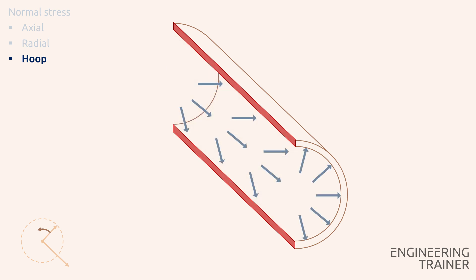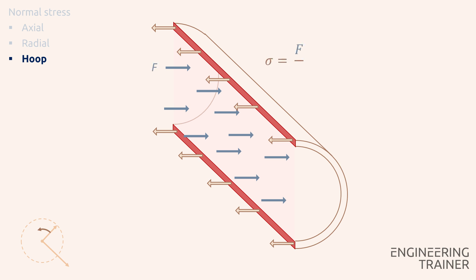The force components perpendicular to the plane try to pull the pipe apart, but the material counteracts these forces, which forms the hoop stress. As long as the pressure is not excessive, both will be in equilibrium. To calculate the hoop stresses, we again divide the force values that have to be counteracted by the area of the cross-section in the material.